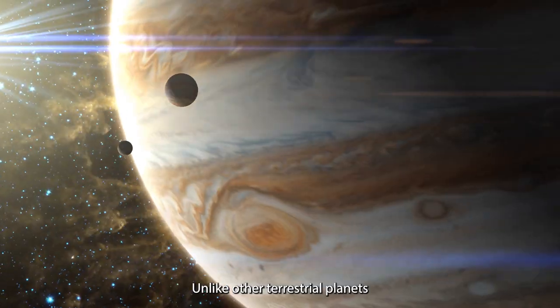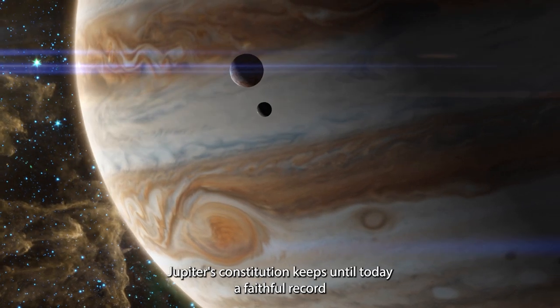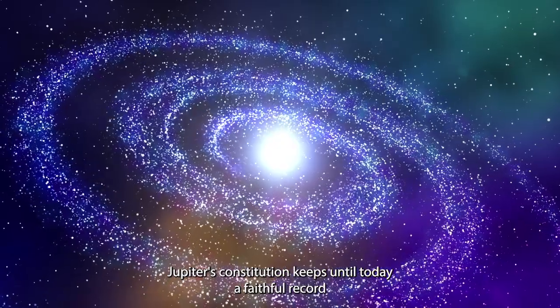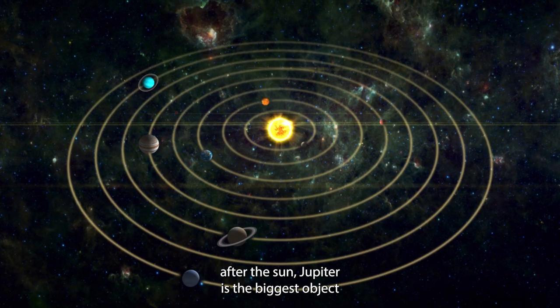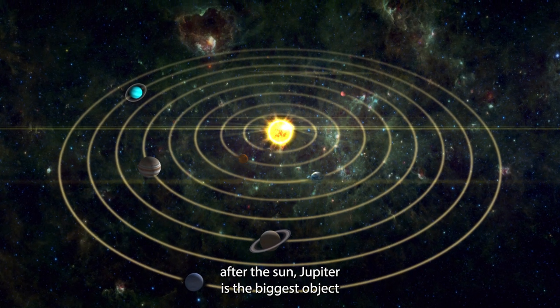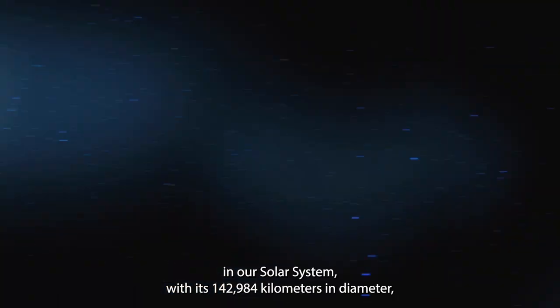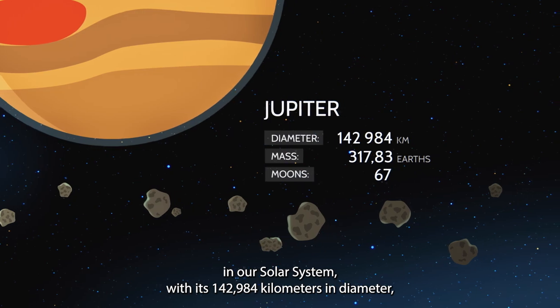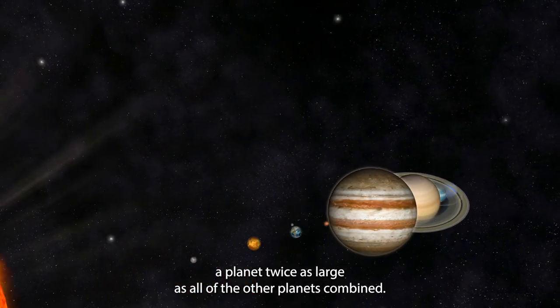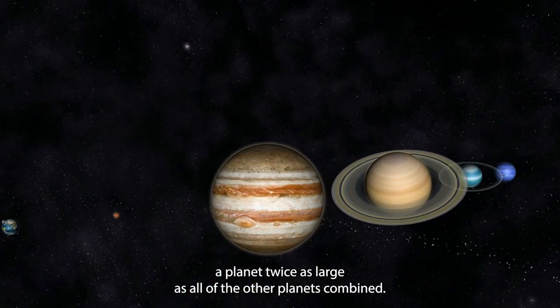Unlike other terrestrial planets, Jupiter's constitution keeps until today a faithful record of the primordial solar nebula. After the Sun, Jupiter is the biggest object in our solar system with its 142,984 kilometers in diameter, a planet twice as large as all of the other planets combined.